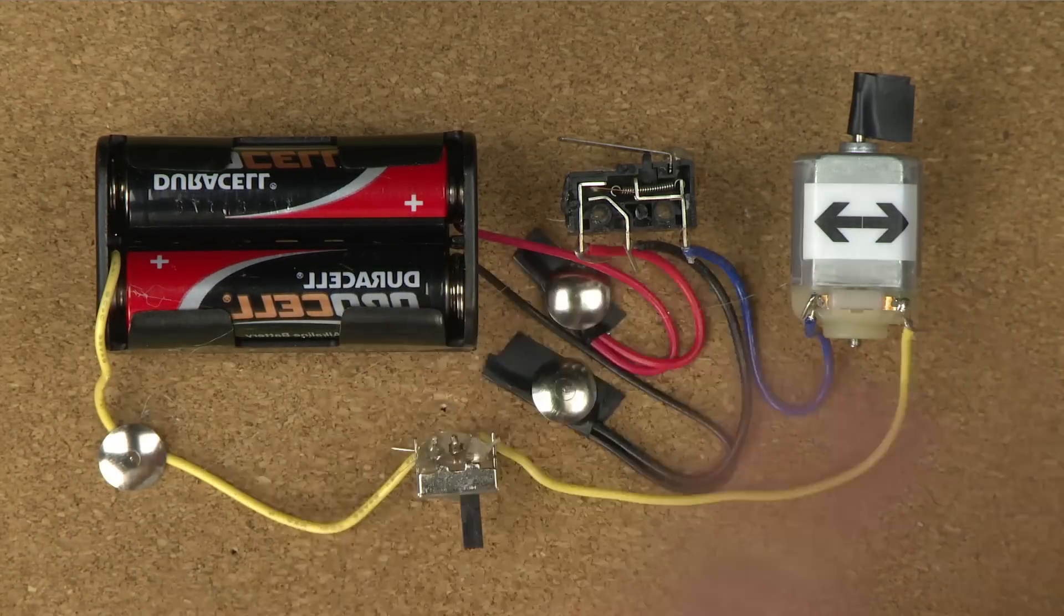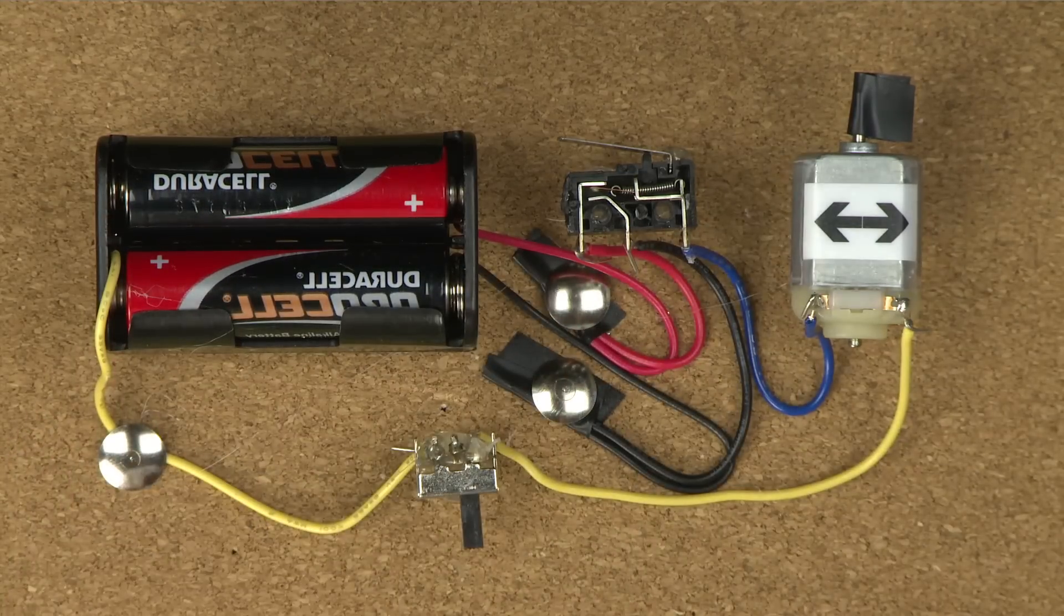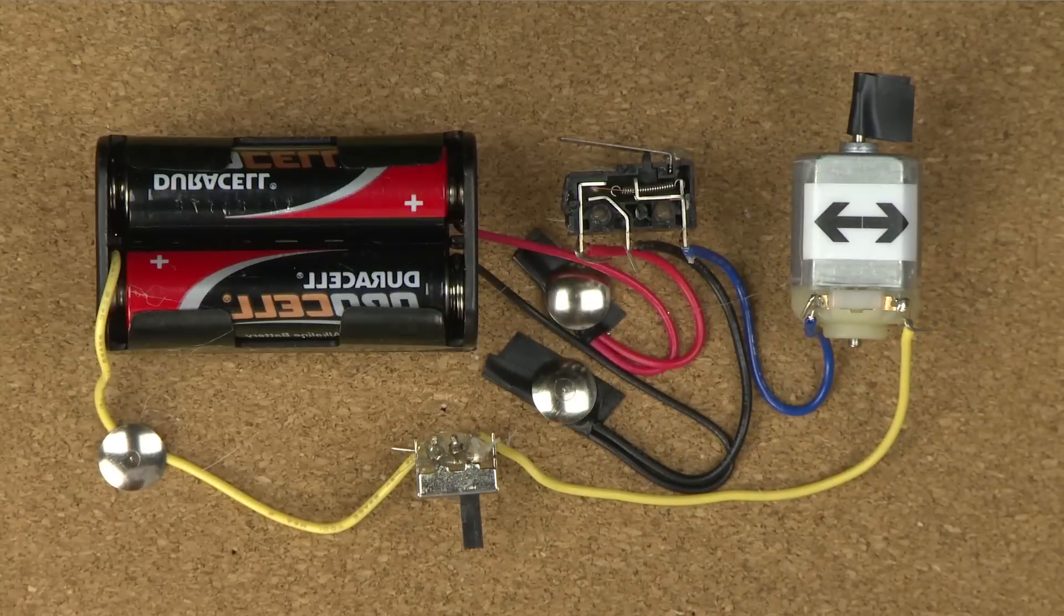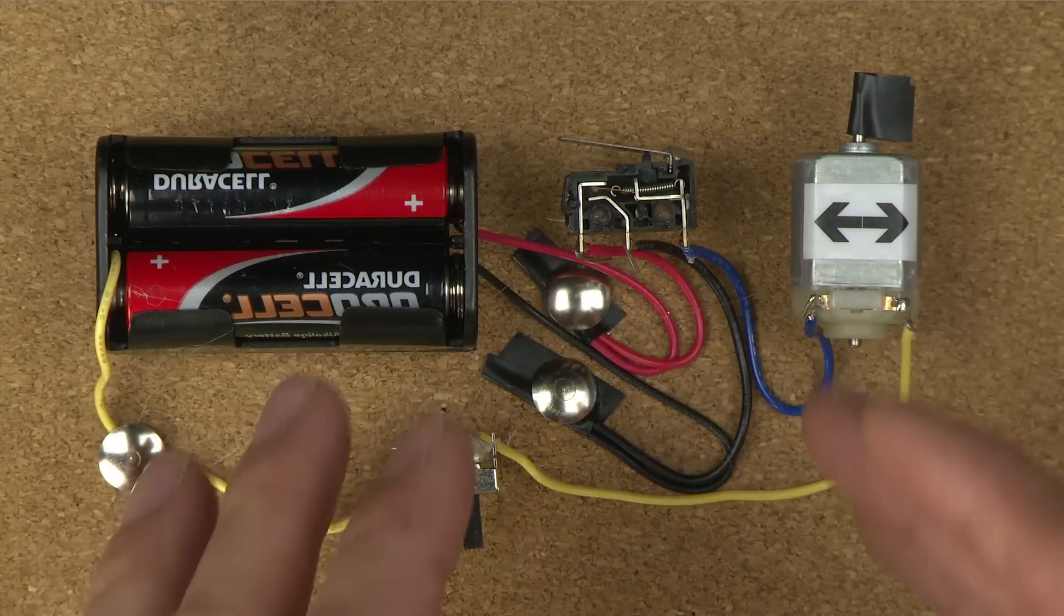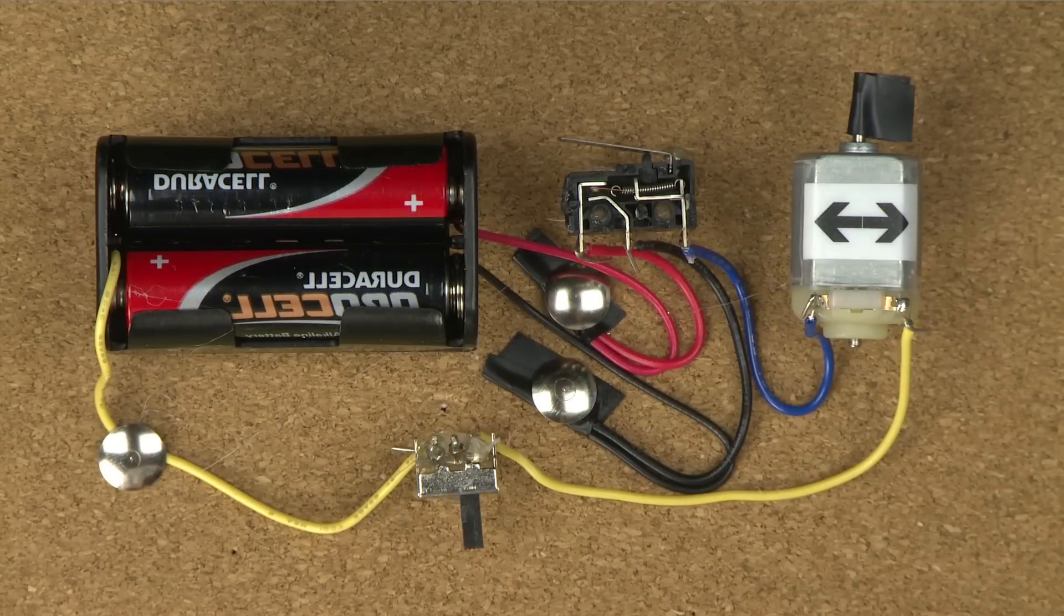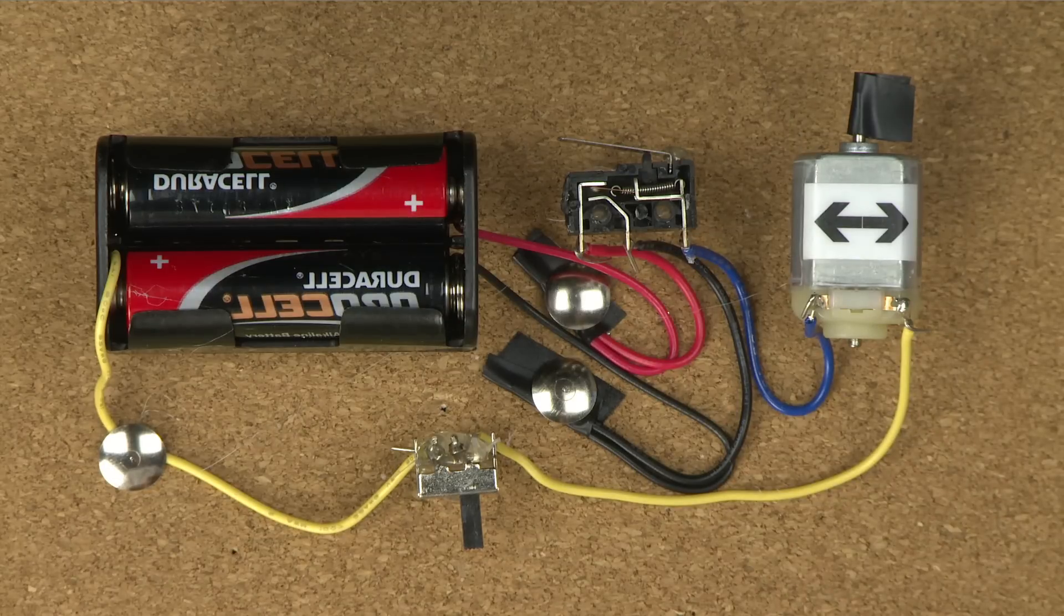And so that causes the motor to flip back and forth. Now, if we take that and we combine it with another switch and another motor, we can make the spout turn around and go back and forth in different directions.